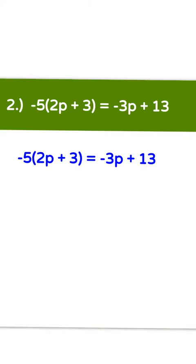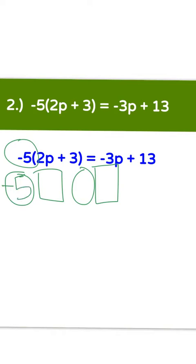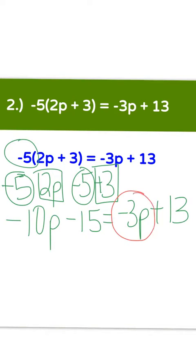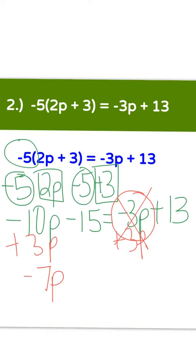Number 2: negative 5 times the quantity of 2p plus 3 equals negative 3p plus 13. You do have parentheses, so you need to distribute. On the left-hand side, use the circle-square method and share the negative 5. Negative 5 times 2p is negative 10p, and negative 5 times positive 3 is negative 15. Bring down the rest: equals negative 3p plus 13. Now get the variable on one side by adding 3p. Then negative 10p and positive 3p — different signs, so subtract: 10 minus 3 is 7p, and 10 was bigger so we keep the negative sign.